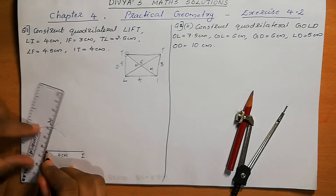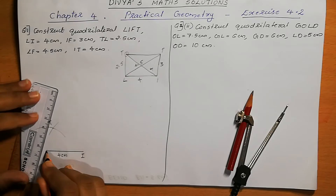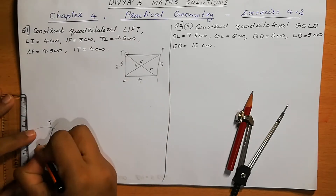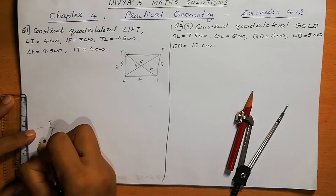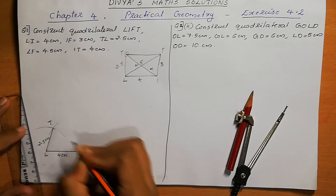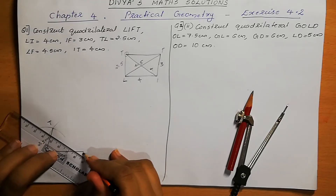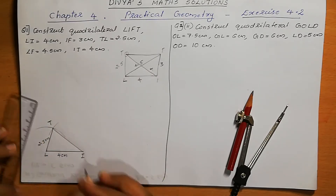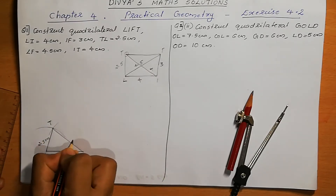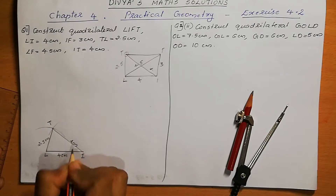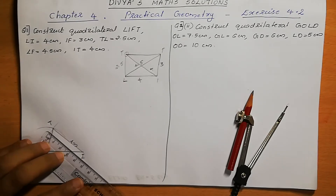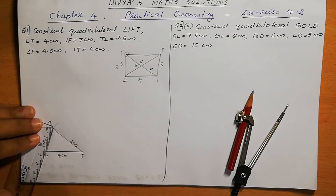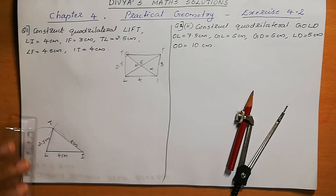So we can mark this as T. We can join L to T — L to T is 2.5 cm. Next we can join IT — IT is 4 cm. We can check that our measurement and drawing is correct: this is 4 cm and this is 2.5 cm. Exactly correct.